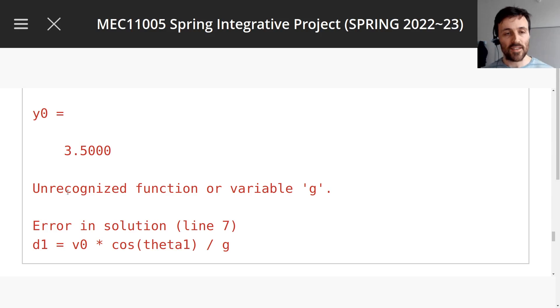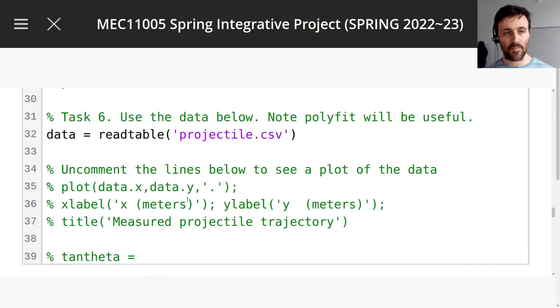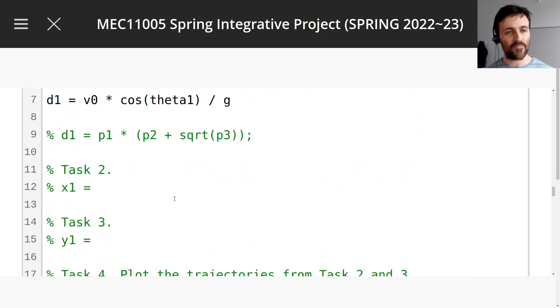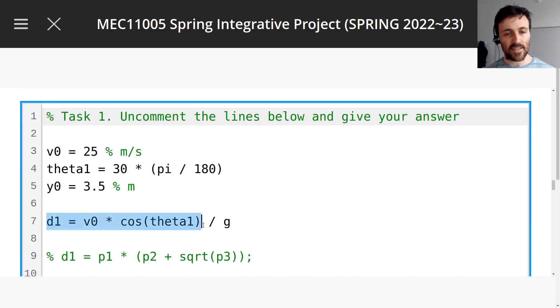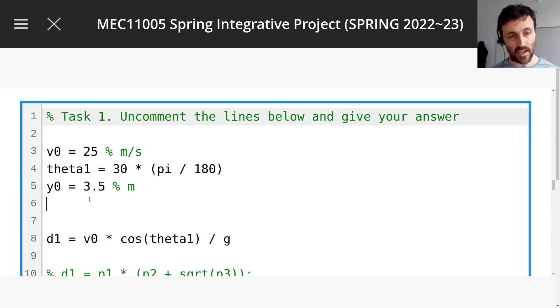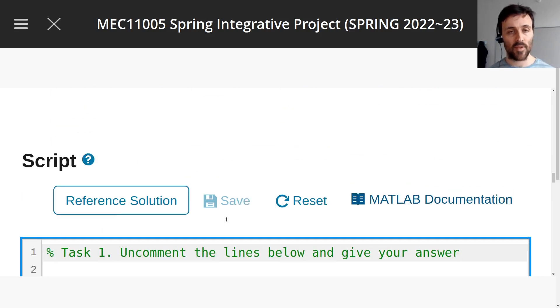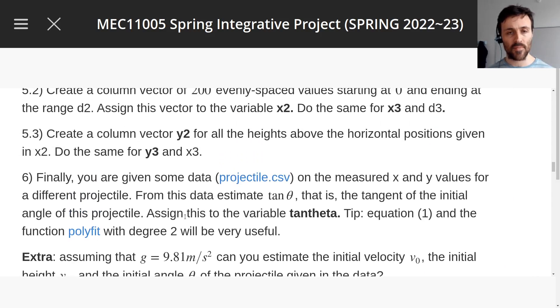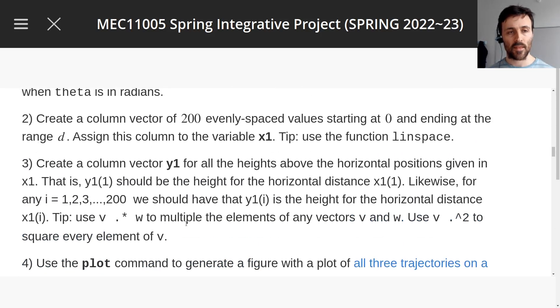And then it says unrecognized function or variable g. You have an error on line seven. Oh my God. The first time you've run code, you already got an error. That's completely natural though. Unrecognized function or variable g line seven. Let's go look at that. Let's go to line seven. Here it is. And it says it doesn't know what g is. It's not a function of MATLAB and it doesn't have a numerical value yet. So that's because we have to give one. Let's give numerical value. Make sure to always read your errors.